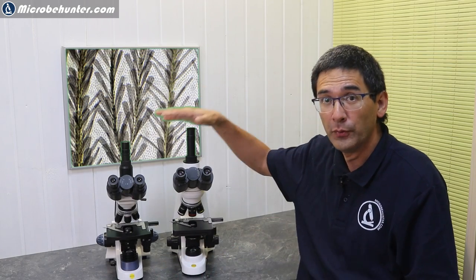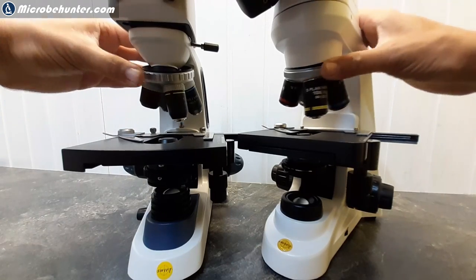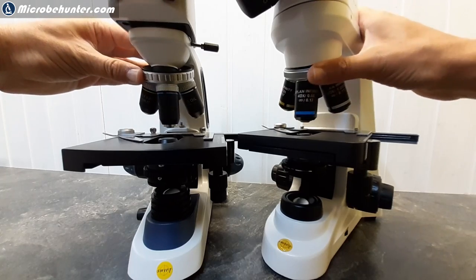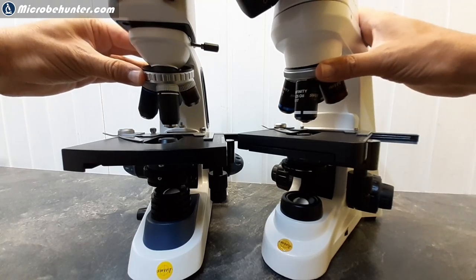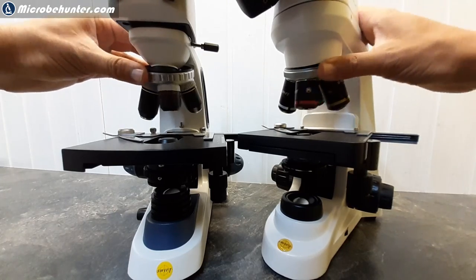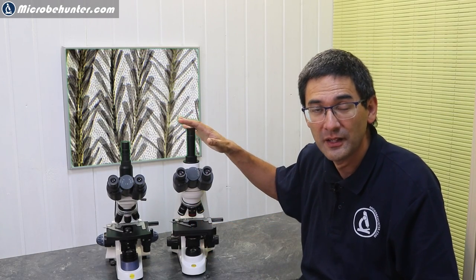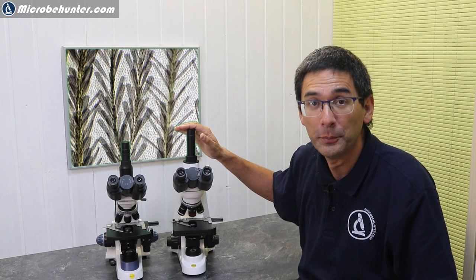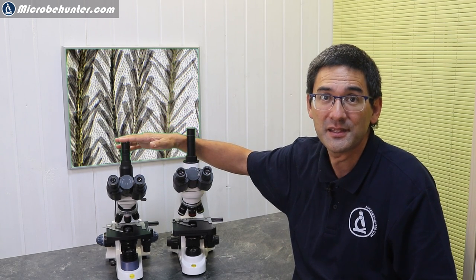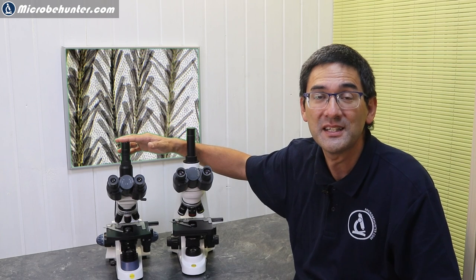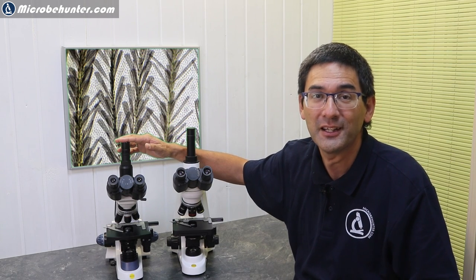Generally both microscopes are quite similar in the sense that they have the same magnifications—both of them have 4x, 10x, 40x, and a 100x oil immersion objective. But the optical standard is different. This Stellar One has infinity optics and the 380T has the traditional 160 millimeter DIN standard, which is actually quite common.